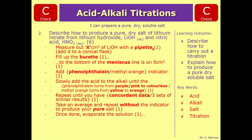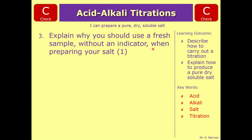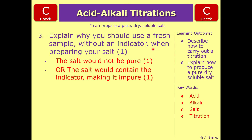Then evaporate the solution — you can mention the Bunsen burner method, but the key points are evaporating the water off and leaving it to dry either on one side or in a desiccator. Question three — explain why you should use a fresh sample without an indicator when preparing your salt. The key thing is purity. You can say the salt would not be pure, or more specifically, the salt would contain the indicator, making it impure.